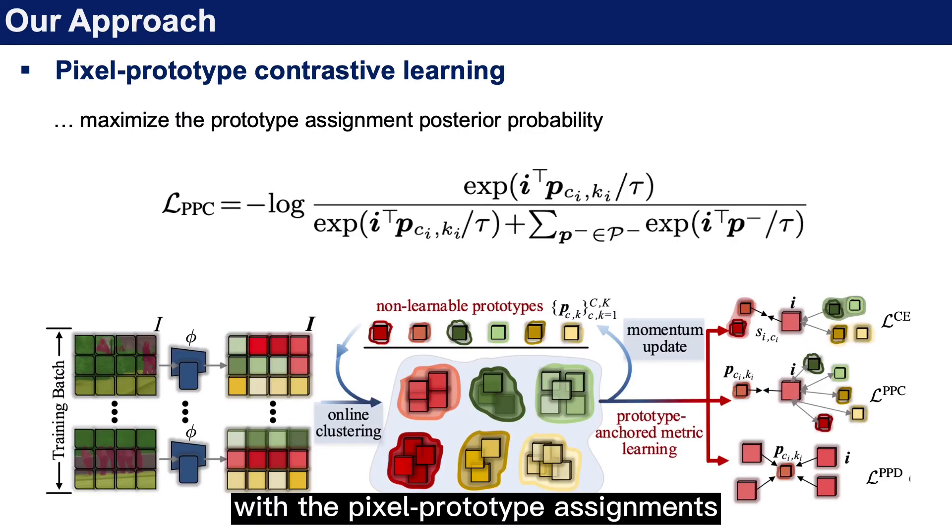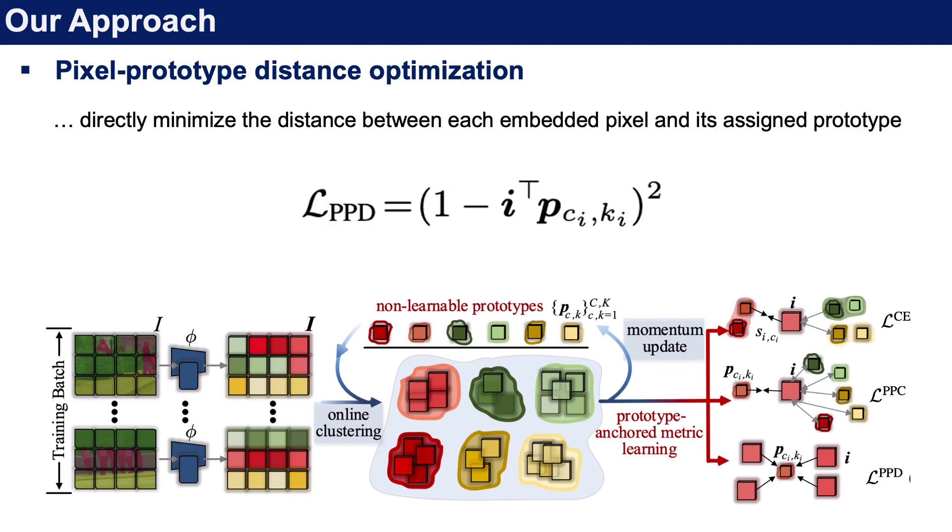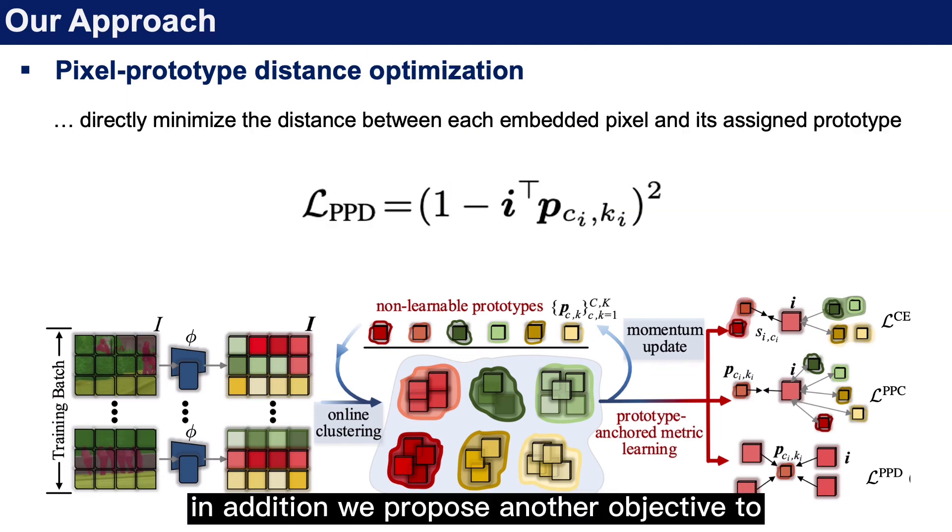With the pixel-prototype assignments, it's natural to derive a training objective for prototype assignment prediction. This can be viewed as a pixel-prototype contrastive learning strategy. In addition, we propose another objective to directly minimize the distance between each pixel and its prototype.